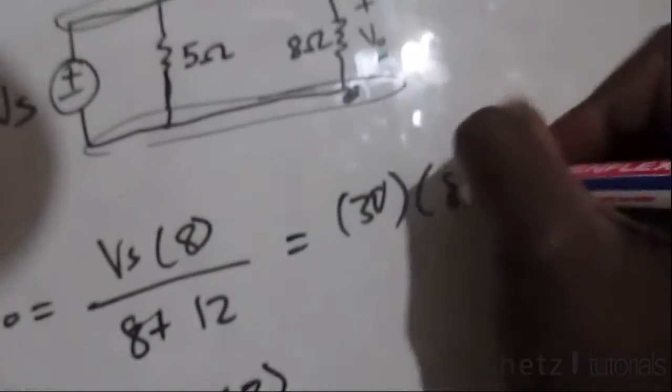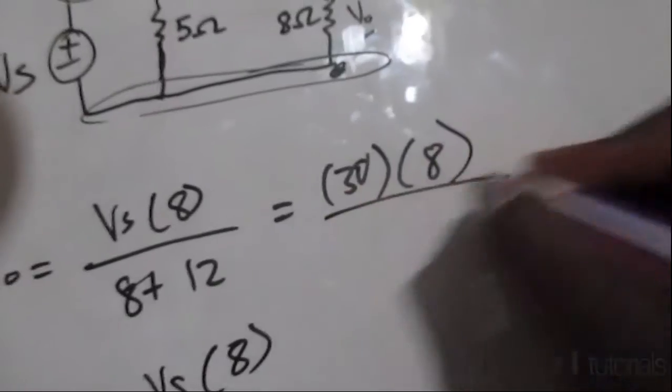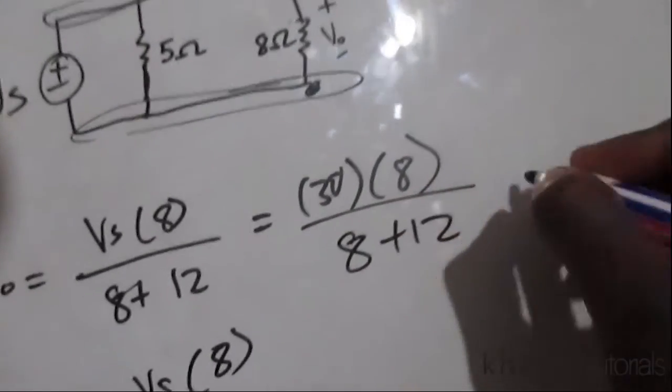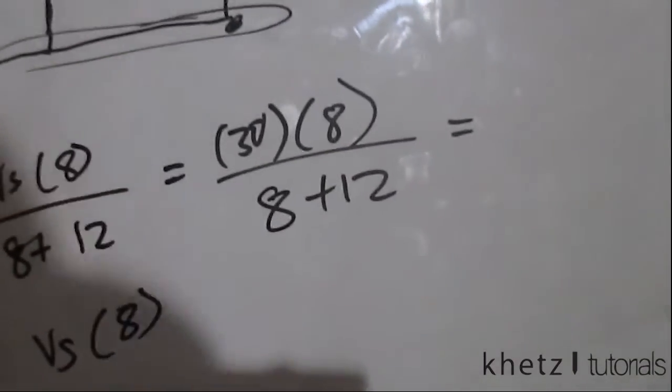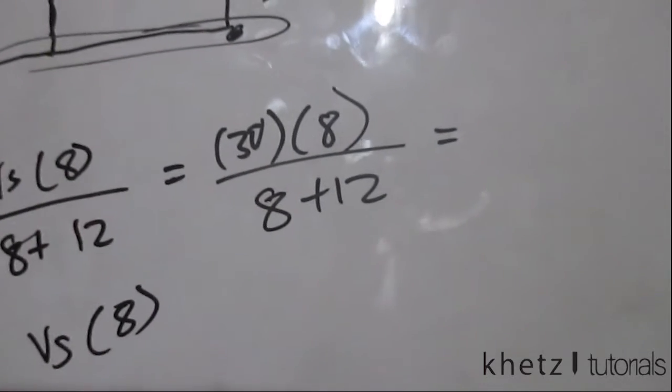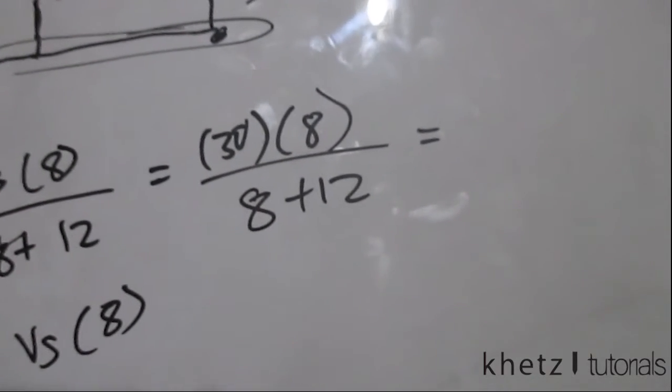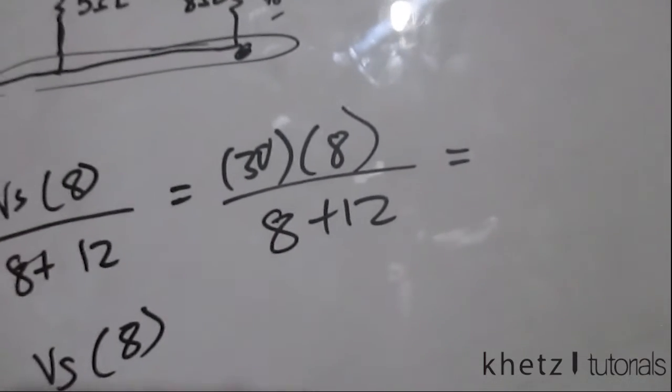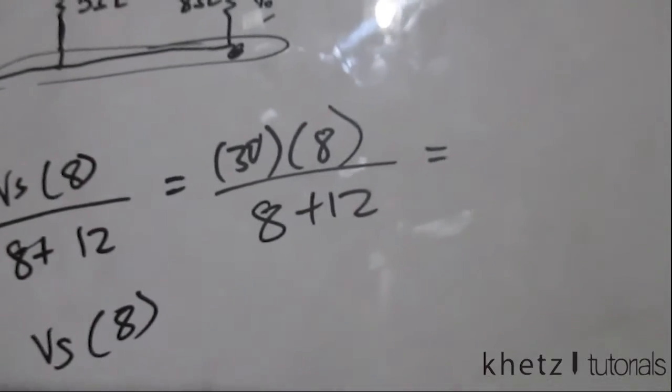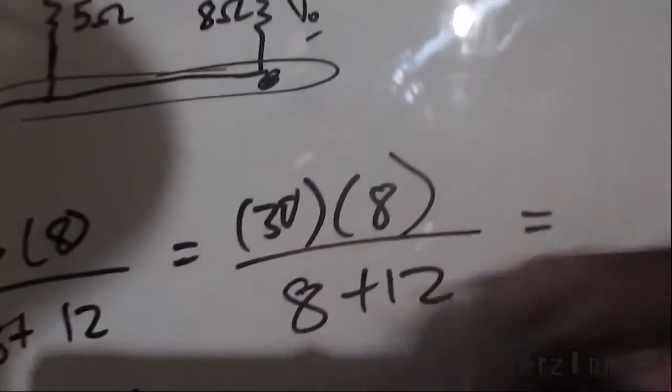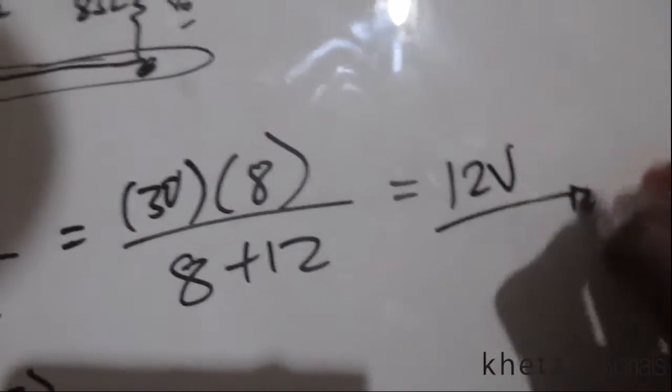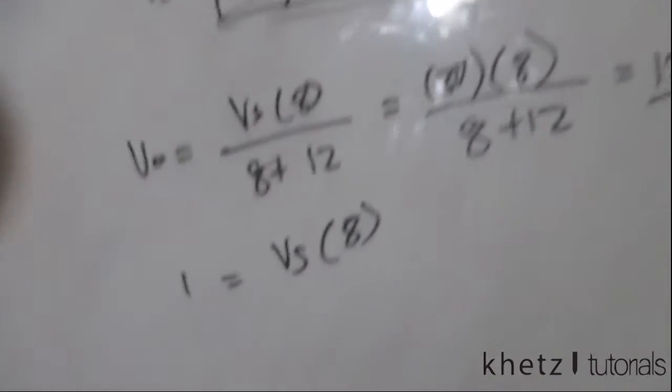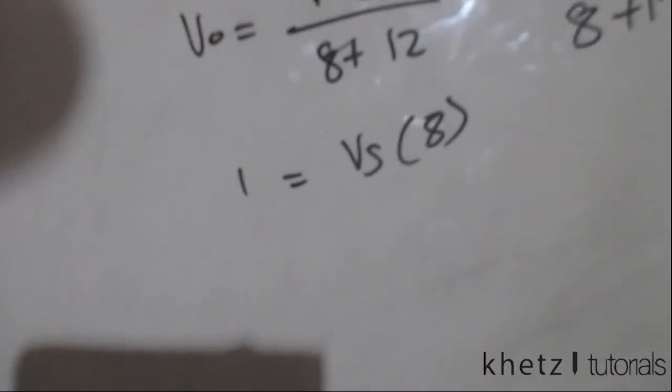This is the method we'd use if we weren't using the linearity property. The purpose of this problem was to simply familiarize yourself with the linearity property, because you could have just simply solved it using this method. Using this simple method, your answer to vo, or your actual vo, will be 12 volts. Now let's see if we use the linearity property if we'll get the same answer.